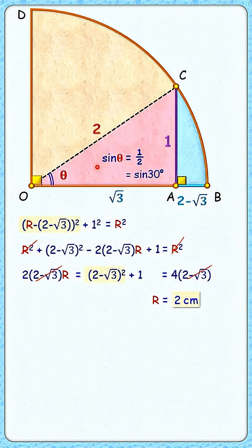And our blue shaded region is nothing but the area of this full sector with angle 30 degrees, from which we will subtract the area of this pink right angle triangle, that is half of base into height.